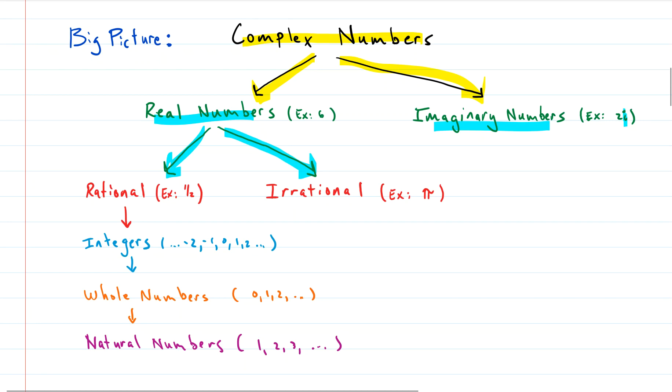So the real numbers can be broken down further into two subgroups. And those subgroups are the rational, which are any number that can be written as a fraction of two integers like one half or three fourths. And the irrational, which is the group that includes numbers like pi.